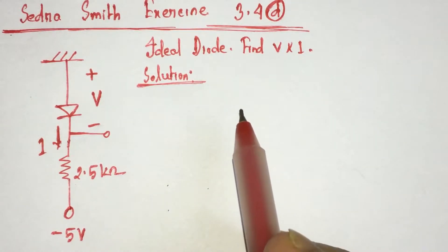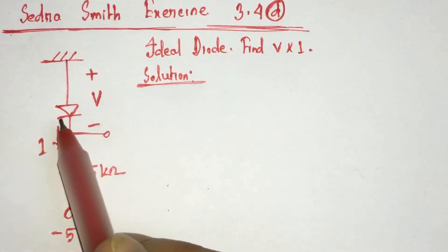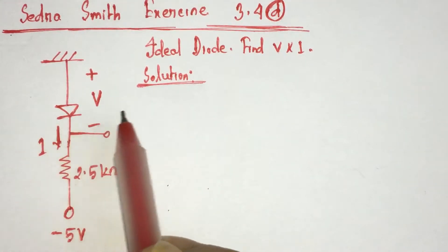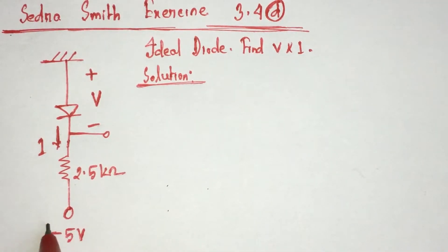For solving diode related problems, at first we have to identify the state of the diode, either the diode is conducting or not. From the circuit we see that the polarity of biasing voltage is negative.